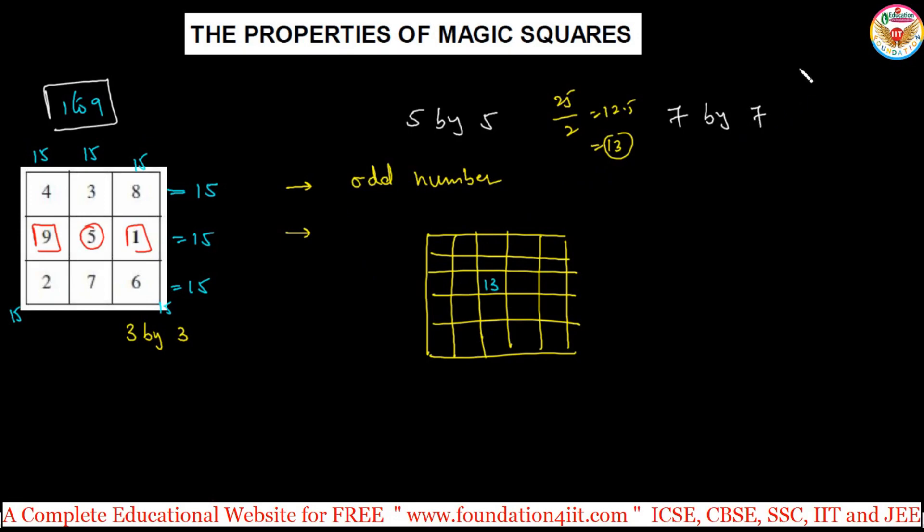If you take 7 by 7, 7 times 7 is 49. Divide by 2, that is 24.5. Round it off is 25. So 25 should be in the center. If you take 7 rows, 7 columns. Same way, 9 rows, 9 columns. This is the order.